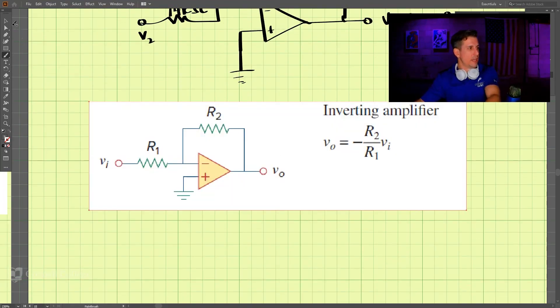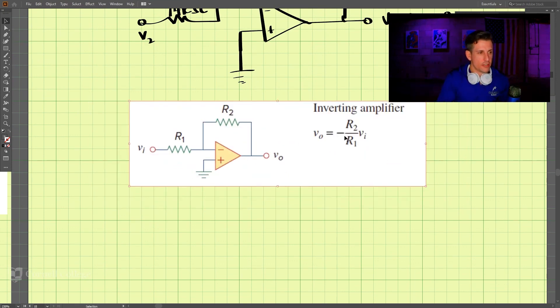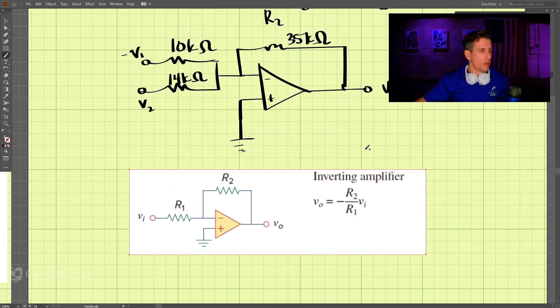So if you take a look at another thing we went through, we have an inverting amplifier. So this changes the sign here of our input voltage. We want r1 and r2 to be the same.